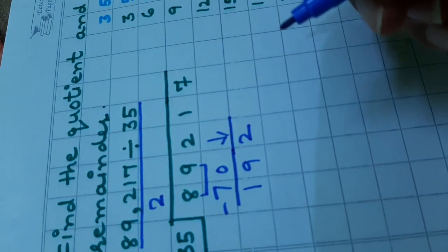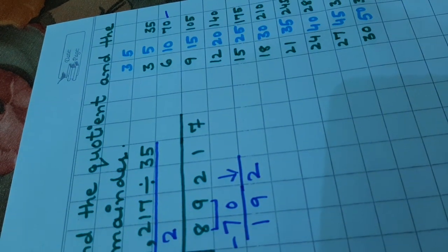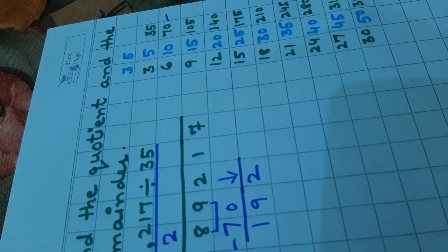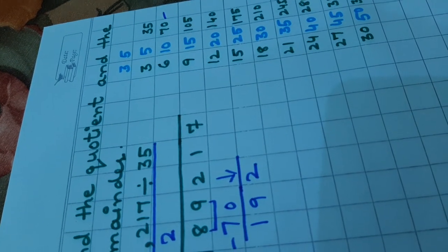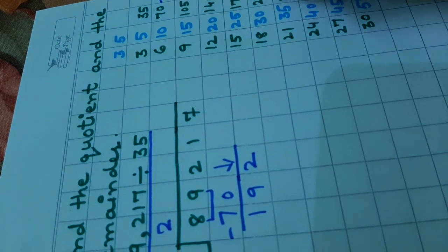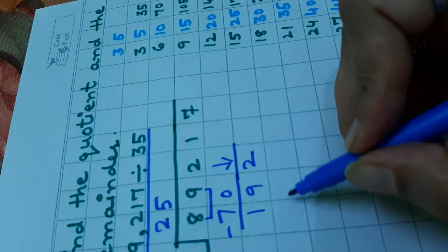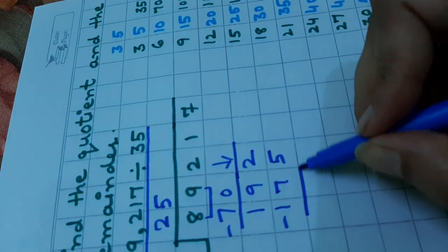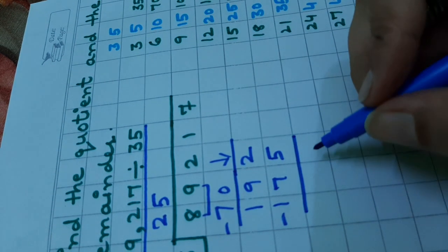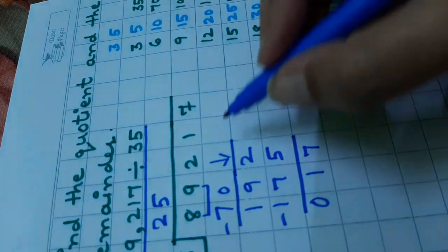Now, the number is 192. We will find 192 or the lesser number from 192 from the table of 35. And the number is 175. 35 fives are 175. Now, subtract it. 12 minus 5 is 7. 8 minus 7 is 1. 1 minus 1 is 0.